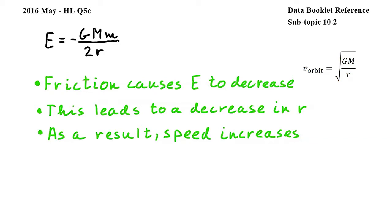In this question, we have to explain the effect of friction on an orbiting probe. First, the frictional force acting on the probe causes E, the total energy of the probe, to decrease.